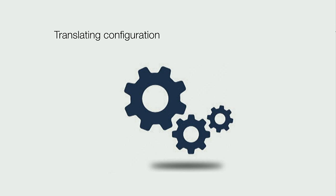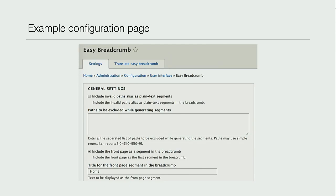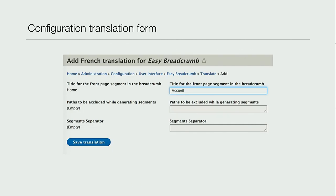Translating configuration - modules like the Easy Breadcrumb module come with strings you can configure through the user interface. With Easy Breadcrumb you can configure the text for the home link. You then need to translate that though. This module at the start of the project we patched and contributed back - it didn't support translation. When you do click translate on the Easy Breadcrumb tab at the top, you get a page with the various fields that can be translated.